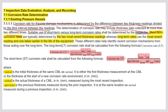The determination of corrosion rate may include thickness data collected at more than two different times. The suitable use of short-term versus long-term corrosion rates shall be determined by the inspector. Short-term and long-term rates apply only to pressure vessels. For API 653, there is no short-term and long-term — only one rate. Here in pressure vessels we have both short-term and long-term.